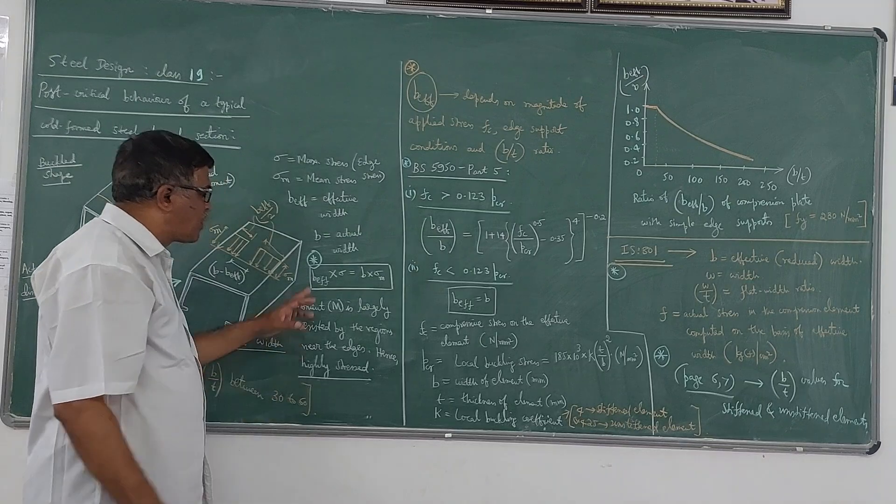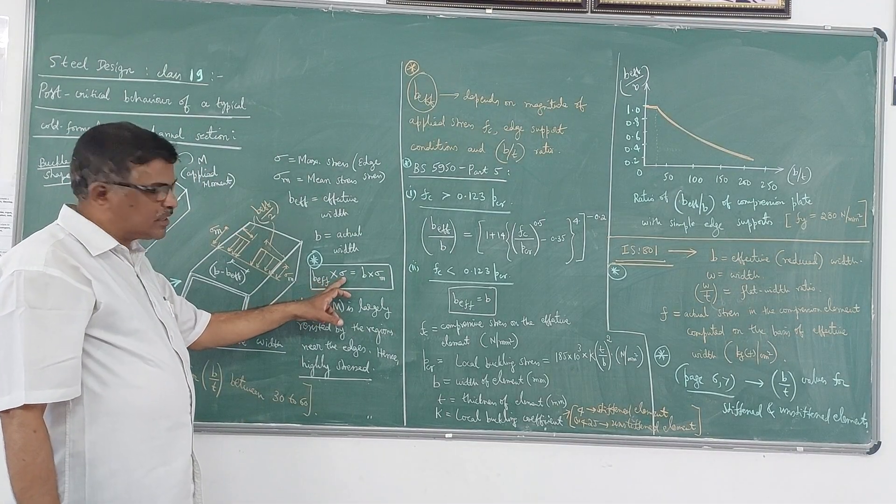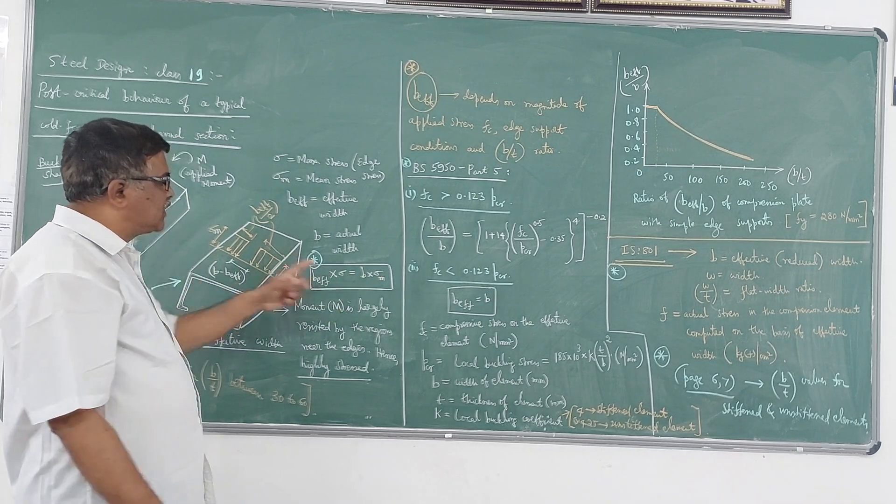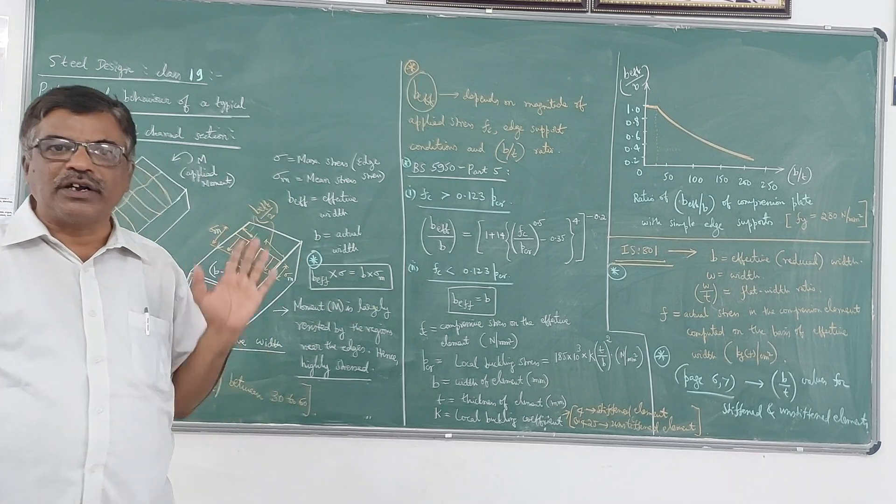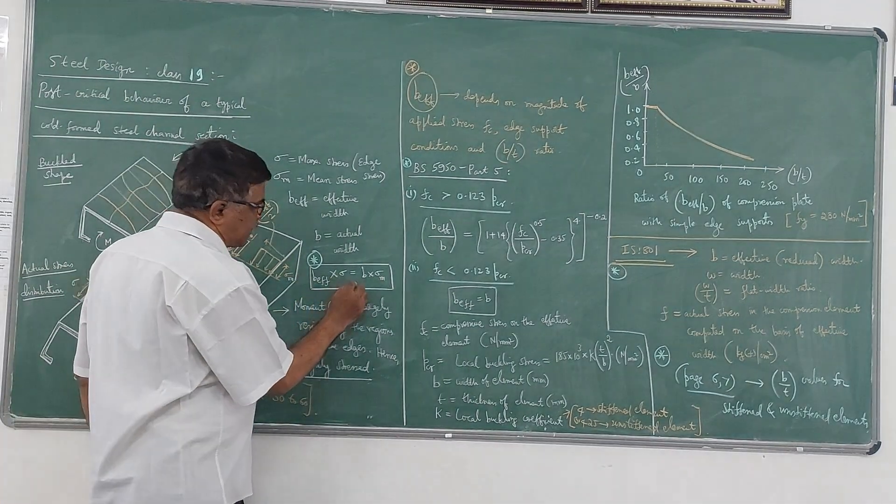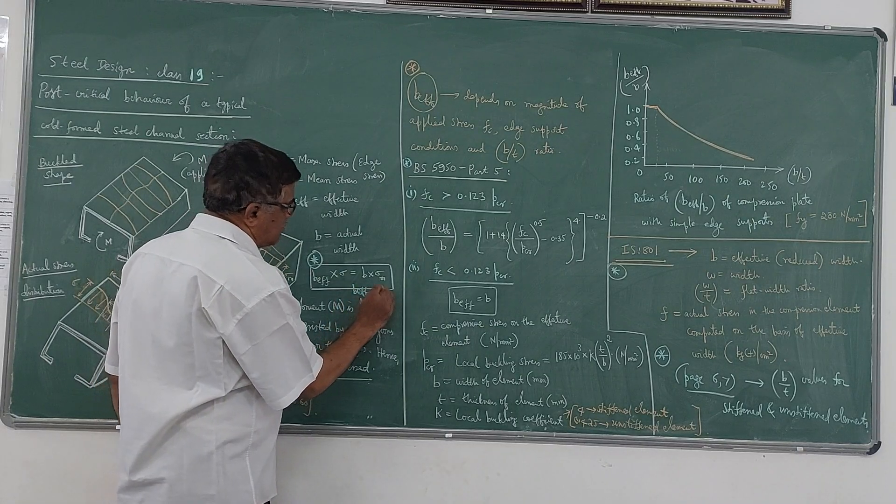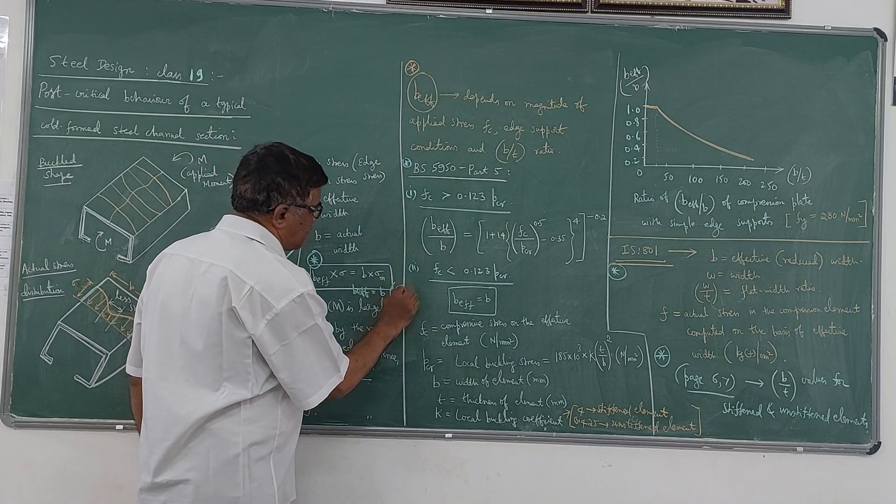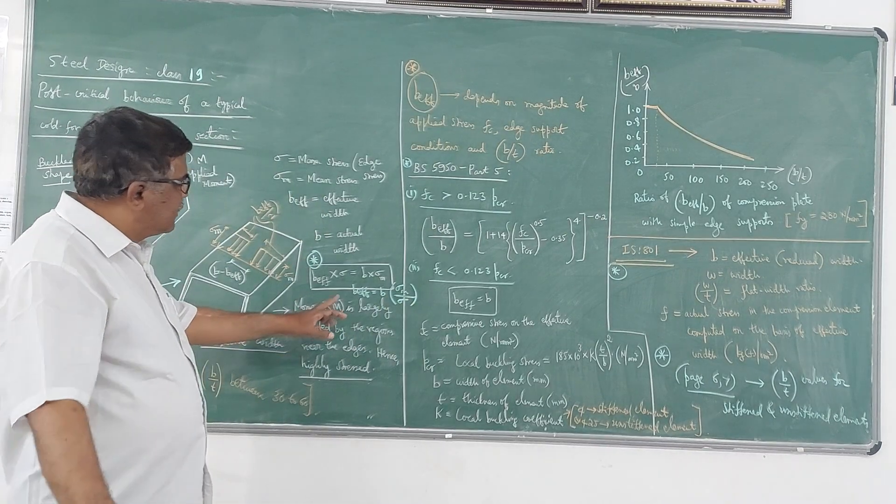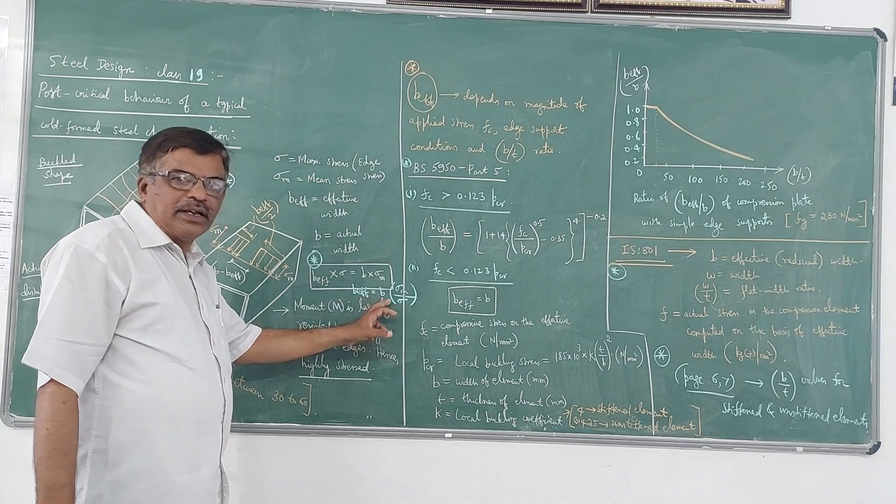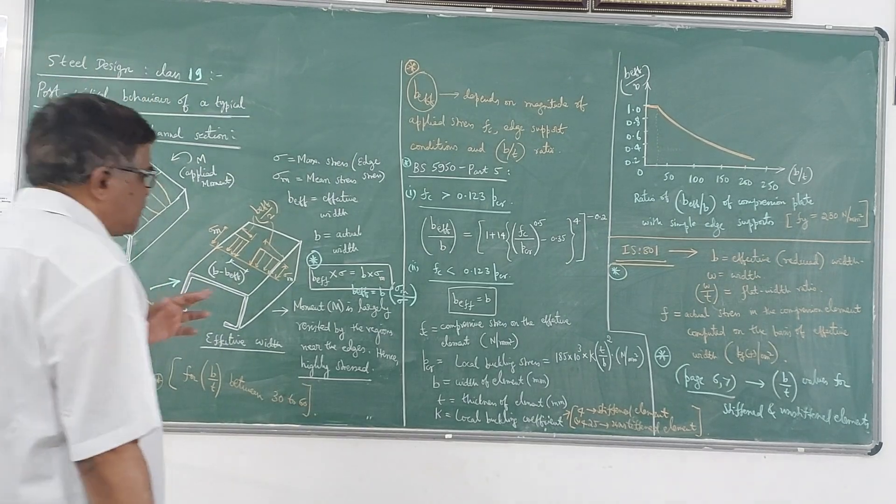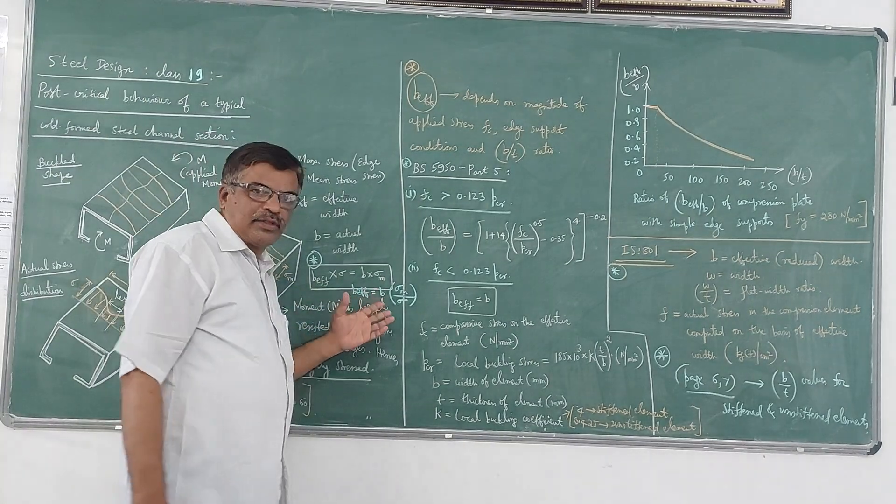That means the product of effective width and the edge stress should be equal to the product of your actual width and the mean stress. So this condition should be satisfied. Then only we can have the definition of this B_effective. That means B_effective can be written as B times sigma_M by sigma - that is edge stress. So here this ratio B_effective divided by B is less than 1 normally, or at the most it can be equal to 1 if this B_effective is equal to B.